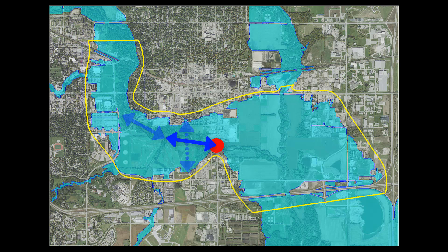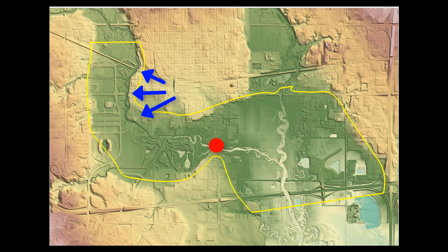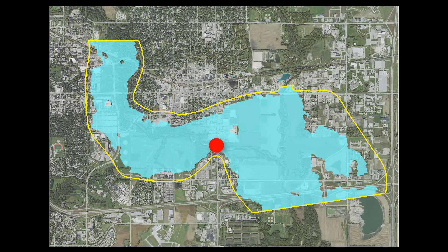Ideal upstream limits are the most constricted locations of the floodplain with simple hydraulic conditions. Example locations include hydraulic controlling topographic features like roadway crossings or natural constrictions in the channel or floodplain. If significant hydraulic controls exist close to the area of interest, the model can start at that location. If a coarse model is developed, a sensitivity test can be used to determine the impacts of changing the location of the upstream boundary.